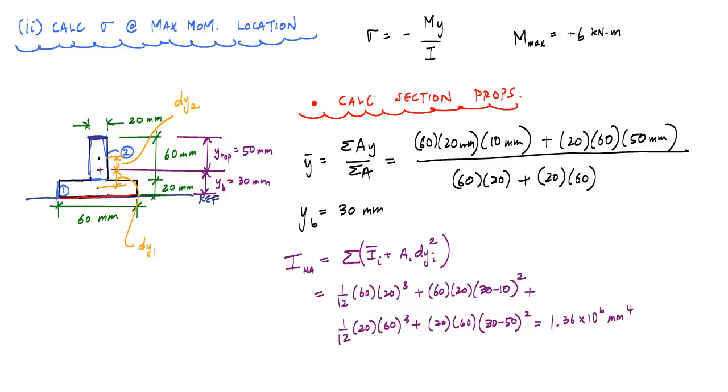Because we have a negative moment, that implies that our moment goes like this, where 6 kilonewton millimeters is applied here, so that we have compression at the bottom and tension at the top. Our maximum normal stresses are going to occur the furthest distances away from the neutral axis, which is right at the centroid here.